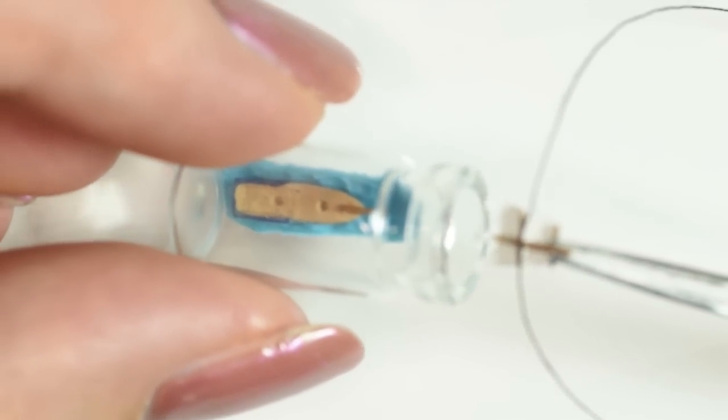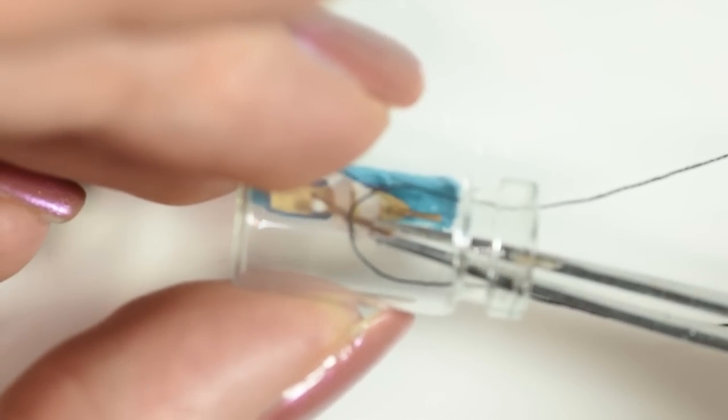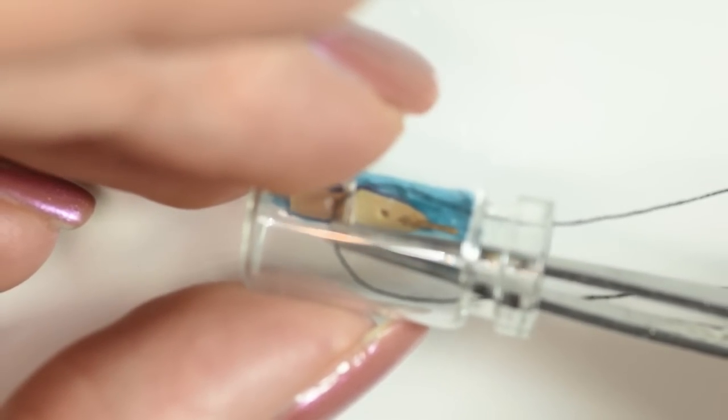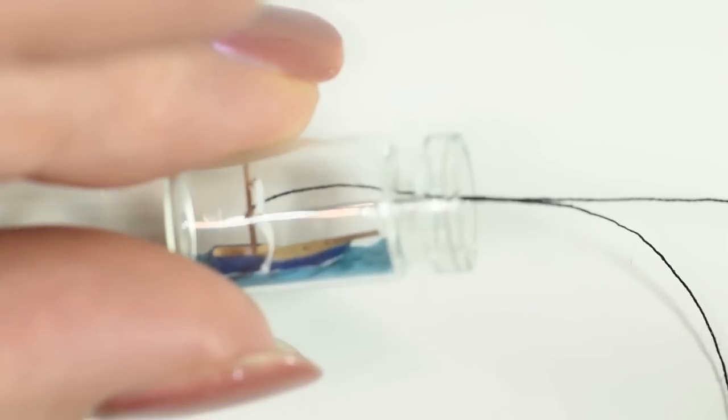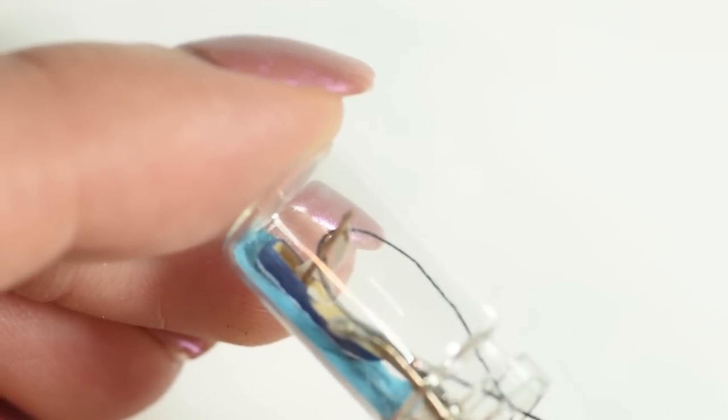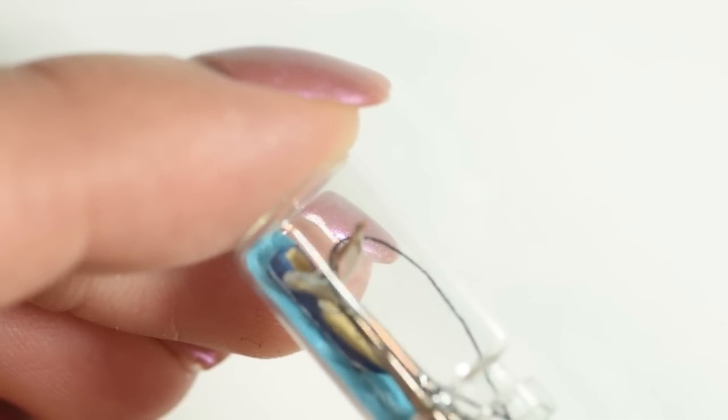Then add a drop of glue to the base of the mast and gently position it. Then stick the ropes down to the sides with glue and cut away the excess.